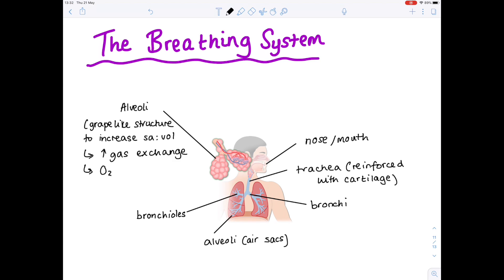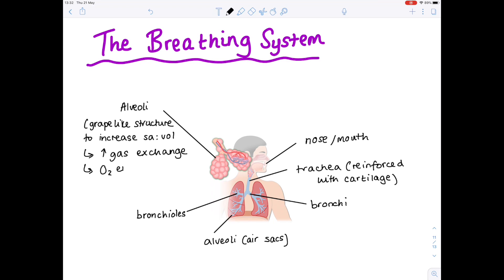And what is gas exchange? Well, effectively, it's oxygen entering the blood and carbon dioxide leaving the blood. And how does that happen? Through small blood capillaries. So each alveolar air sac has a large network of blood capillaries, and that allows gas exchange to take place nice and quickly.